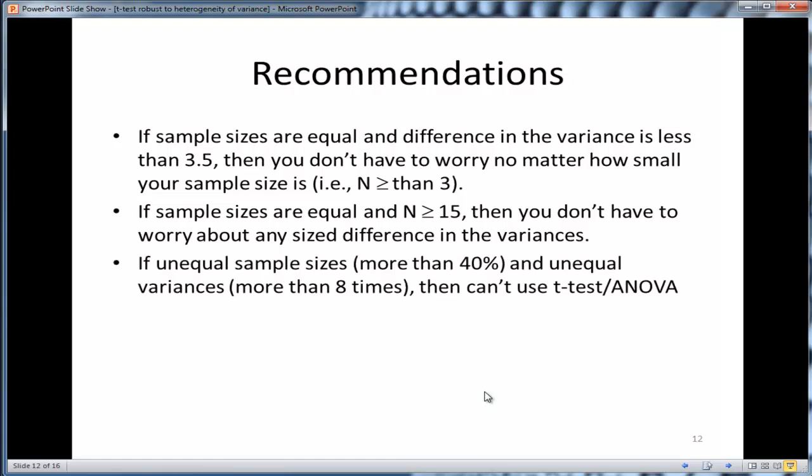If samples are unequal, and unequal as in 40% difference between the smallest and largest, and unequal variances more than 8 times, then you can't use the t-test or ANOVA. Your p-value will not be robust. It'll be beyond 0.06 or less than 0.04.